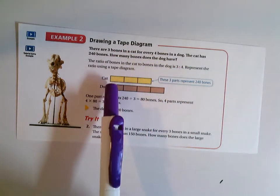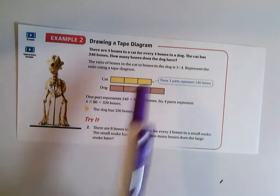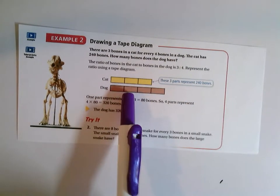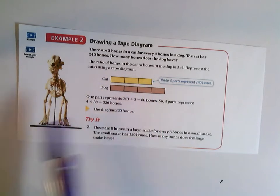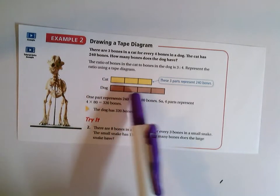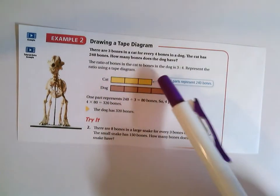Okay, so here we have the cat, three bones, the dog, four. So for every three bones that a cat has, a dog has four. That's my ratio of three to four.